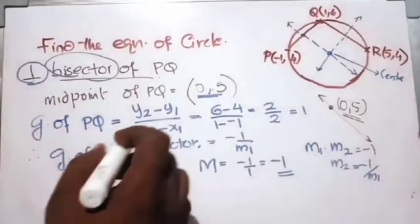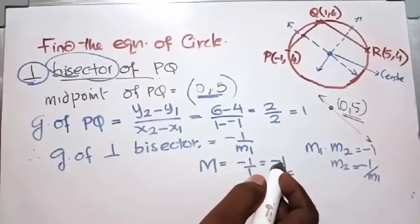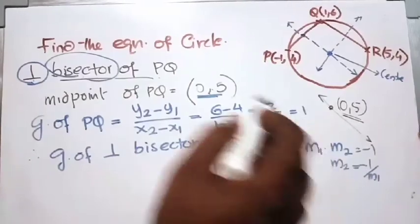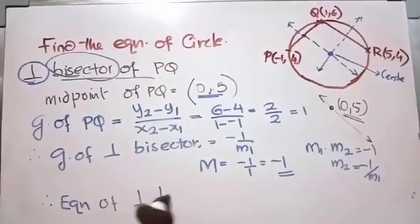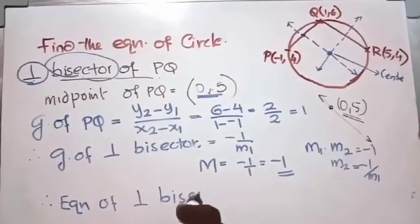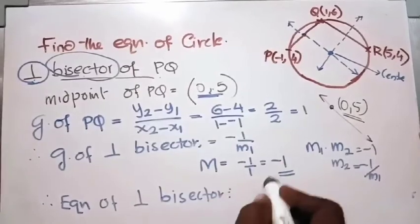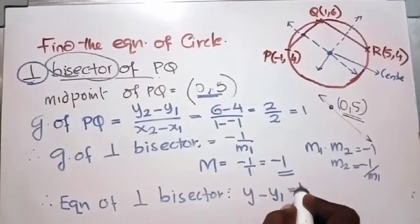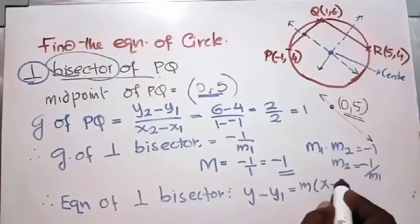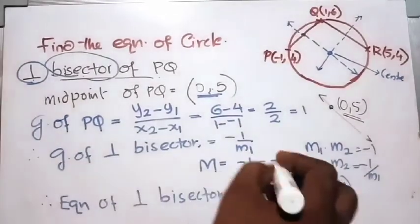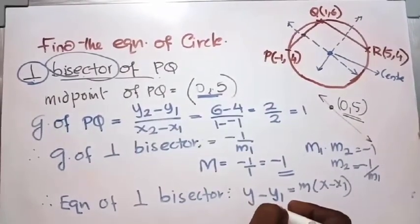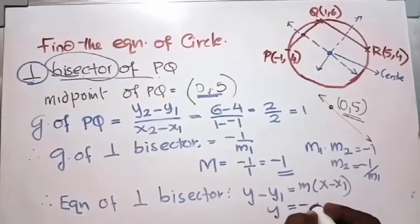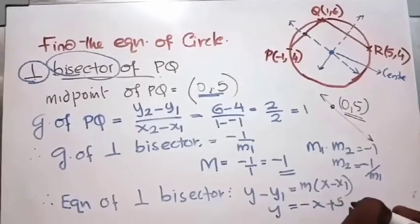So the gradient of the perpendicular bisector is minus 1 and a point on it is (0, 5). Using the point-gradient form y minus y1 equals m(x minus x1), substituting and simplifying gives the equation of the perpendicular bisector as y equals minus x plus 5.